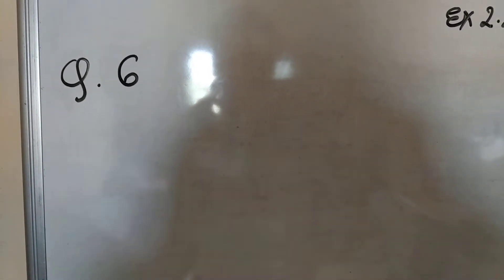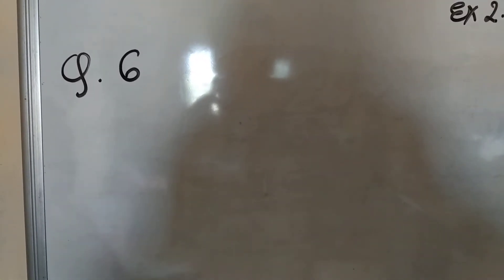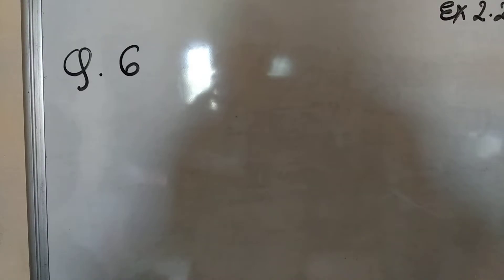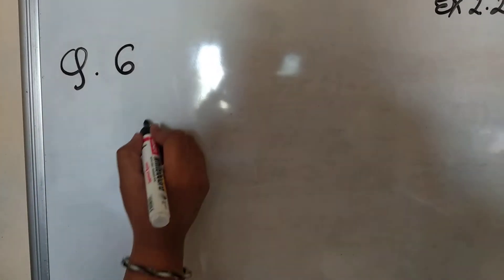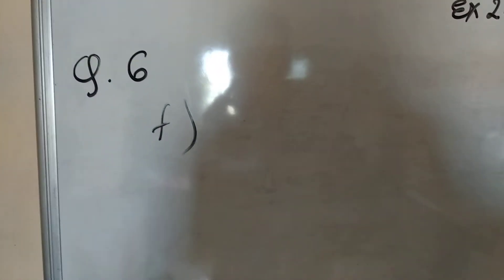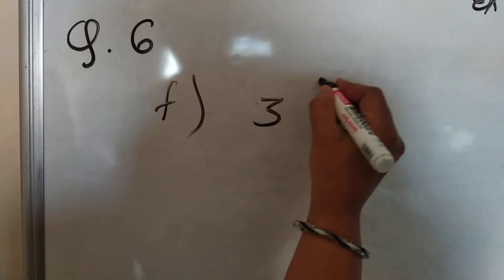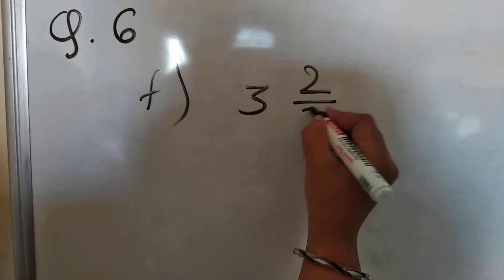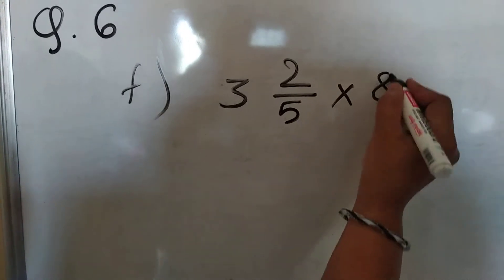Yesterday we started question number 6, and in those 2 sums we finished one. Now we will see the F sum. Here 3 and 2/5 multiplied by 8.